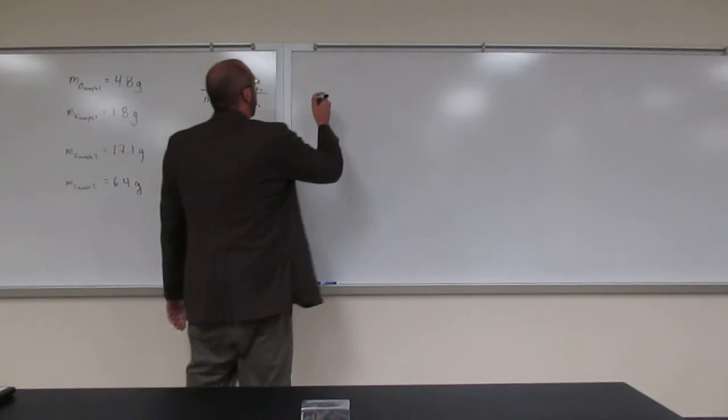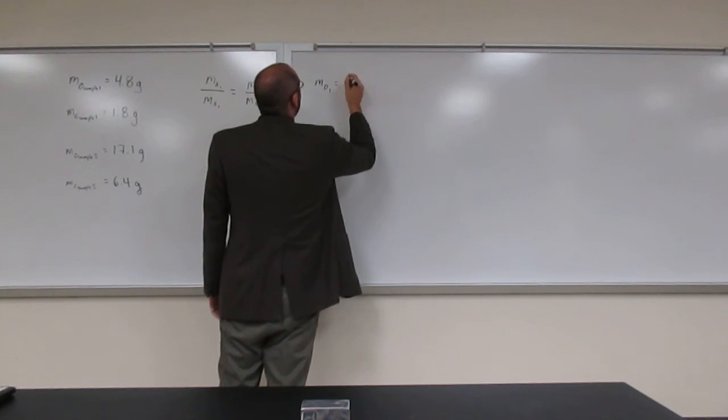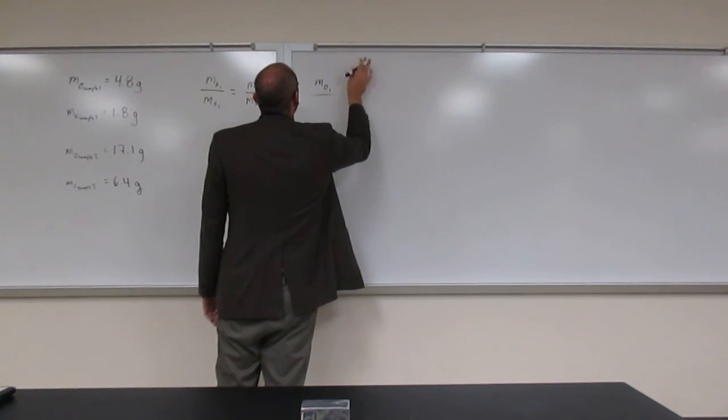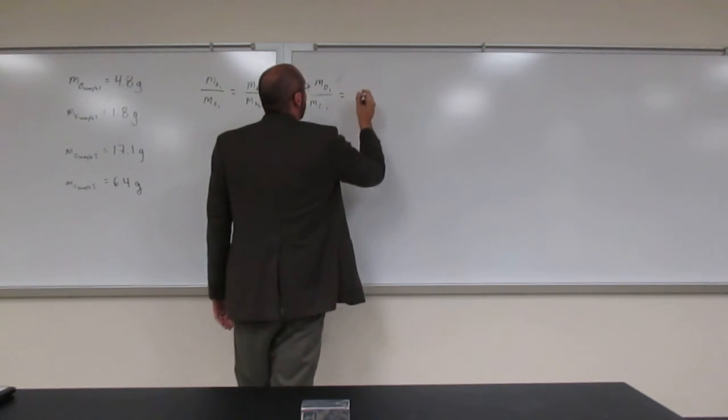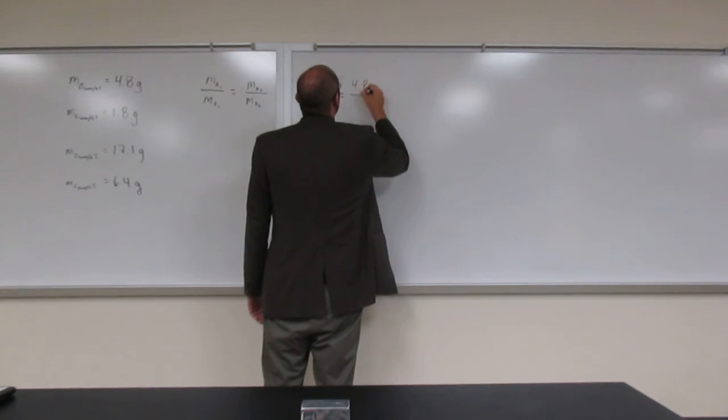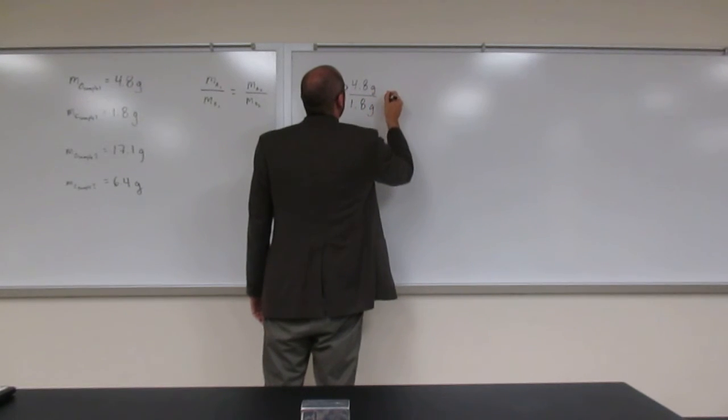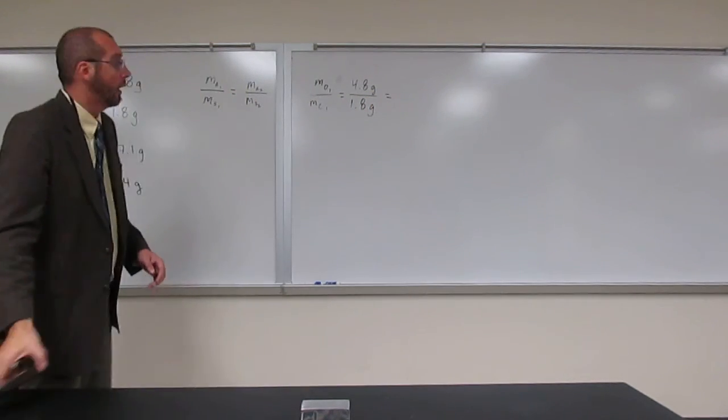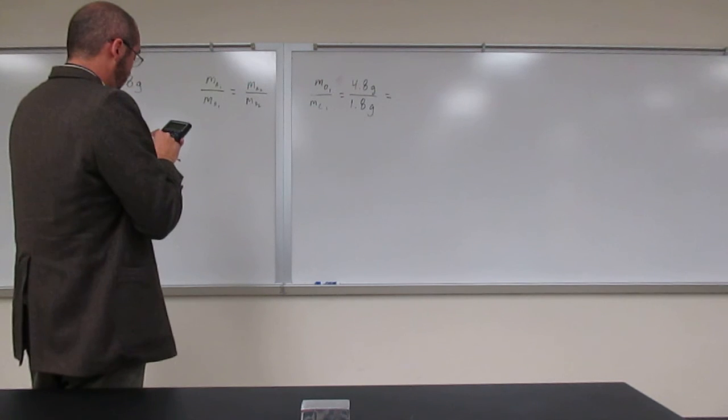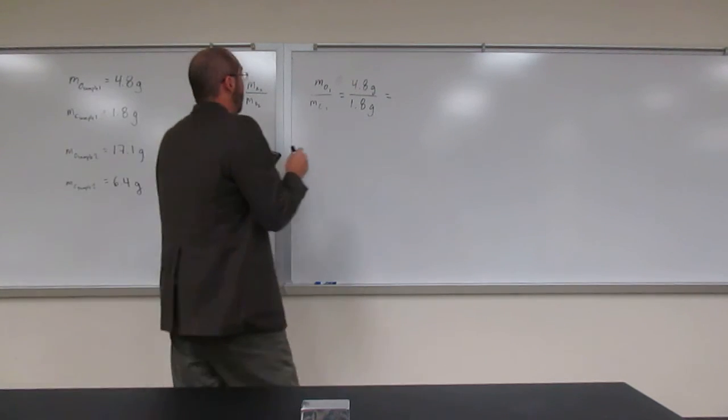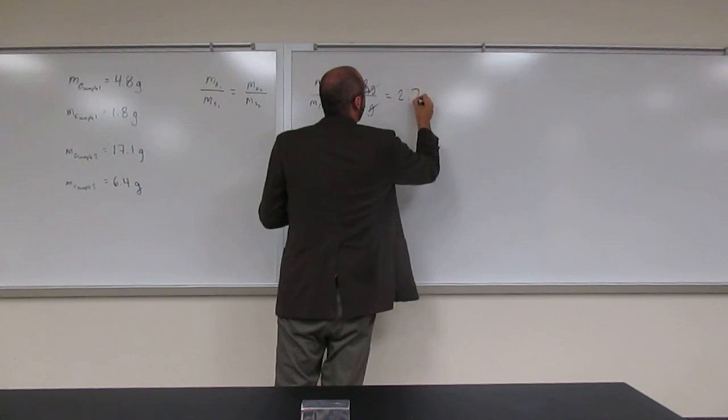The mass of oxygen in sample 1 divided by the mass of carbon in sample 1 is 4.8 grams divided by 1.8 grams. Getting out the calculator, notice grams divided by grams cancels. That equals 2.7.